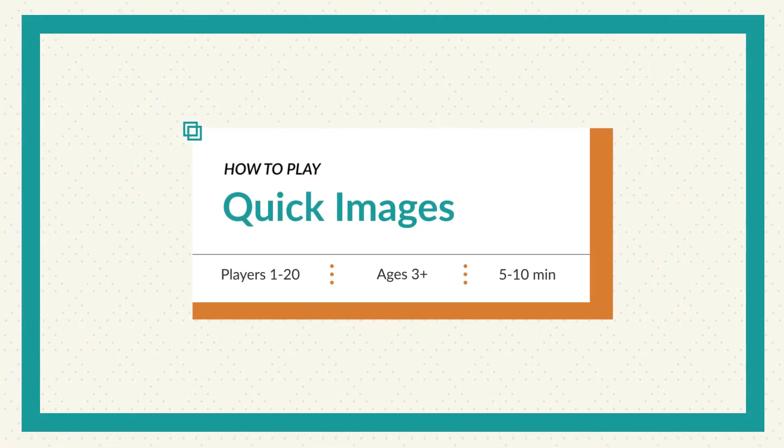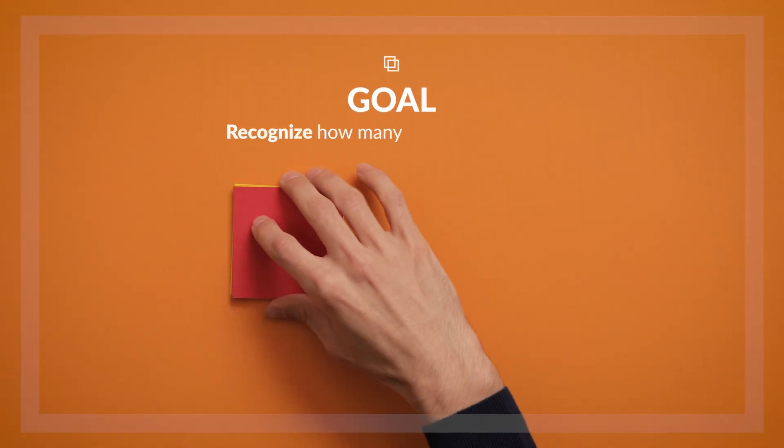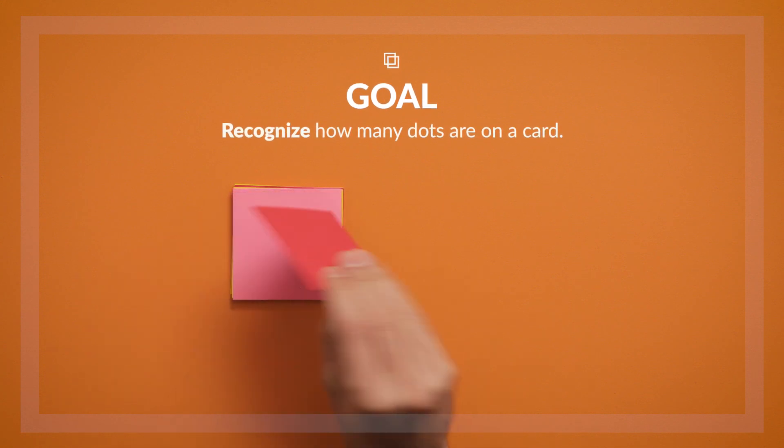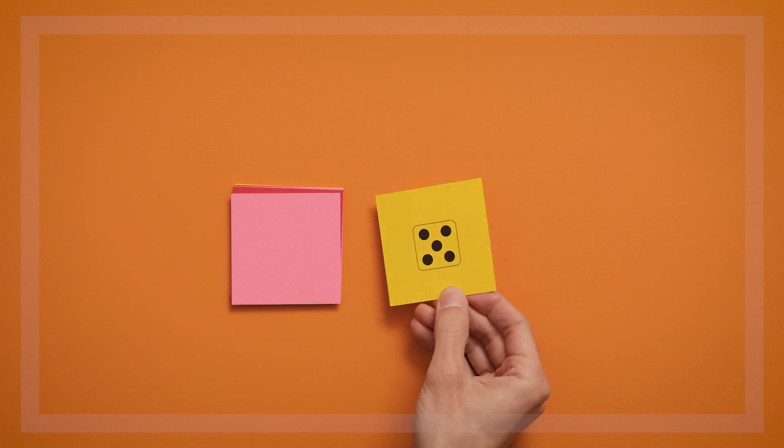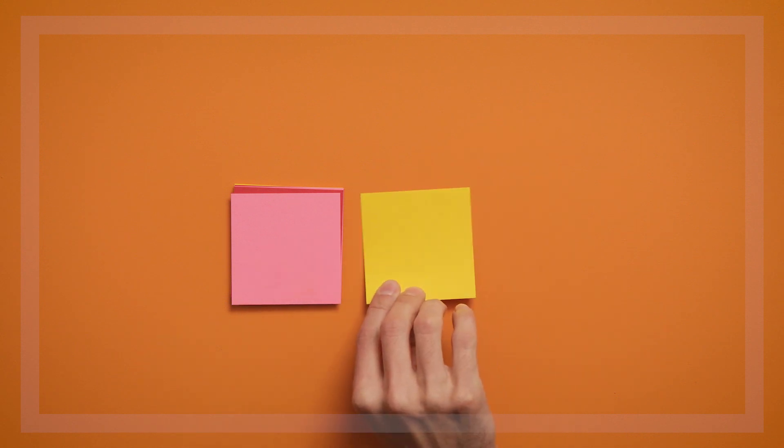This is a game called Quick Images. The goal of Quick Images is to immediately recognize, or in math terms, subitize how many dots are on a card. This game is fun for everyone, from preschoolers to adults.